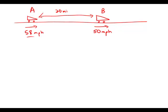So because both these velocities are constant, the velocity of A gaining on B will be 58 minus 50, which is 8 miles per hour. That is the rate at which A will gain on B.